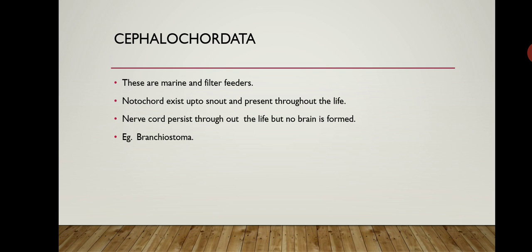The next sub-phylum is Cephalochordata. The organisms of Cephalochordata are marine and filter feeders. The notochord extends from the snout and is present throughout life. The nerve cord persists throughout life but no brain is formed. The example is Branchiostoma.